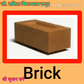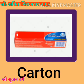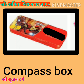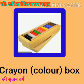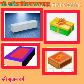Now observe these pictures. It is a brick. It is a carton of toothpaste. It is a compass box. It is a matchbox. It is a color box. These are some things with the same shape. You have these things in your house. Let's handle them and observe how many edges they have.